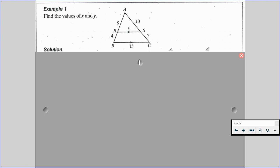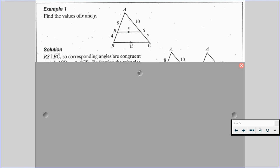And we are asked to find the values of X and Y. Well, as we look through our solution here, we know RS is parallel to BC, so corresponding angles are congruent. Likewise, we're going to know that triangle ASR is similar to triangle ACB. So our smaller triangle is similar to our bigger triangle.